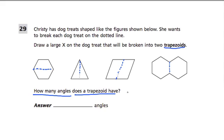A trapezoid has four edges or sides, just like a rectangle or square. And it has one pair of parallel lines.